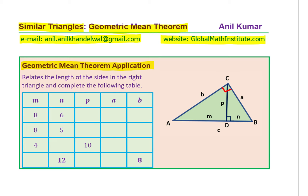If we have a right triangle and drop an altitude CD as shown, this altitude divides the hypotenuse AB into two segments AD and DB. These two segments are related with the length of the altitude. The relation is that length P is the geometric mean of the other two segments, meaning P squared equals M times N. That is what the geometric mean theorem states.